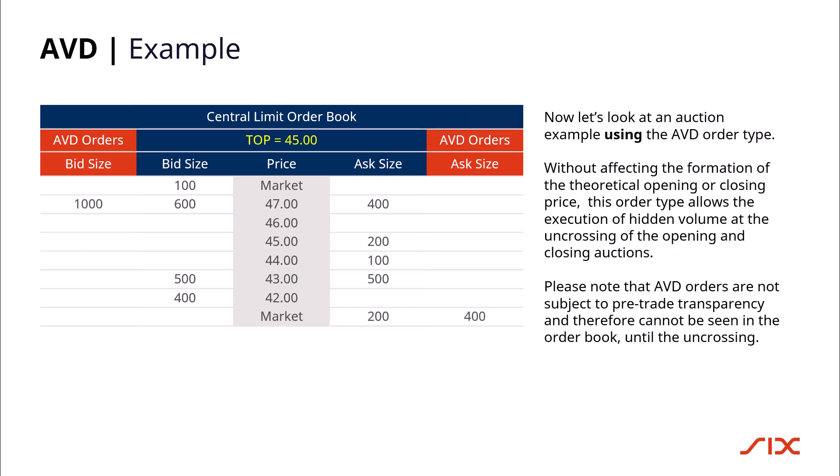Now let's look at an auction example using the AVD order type. Without affecting the formation of the theoretical opening or closing price, this order type allows the execution of hidden volume at the uncrossing of the opening and closing auctions. Please note that AVD orders are not subject to pre-trade transparency and therefore cannot be seen in the order book until the uncrossing.